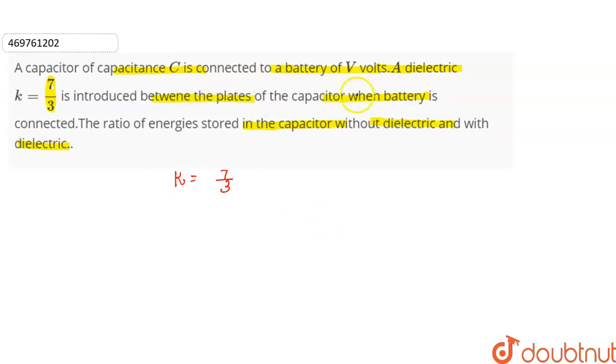The parallel plate capacitor capacitance C is equal to epsilon naught A by d. When we introduce the dielectric constant, C becomes equal to epsilon naught k A by d.